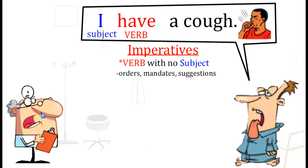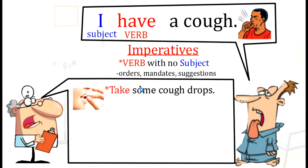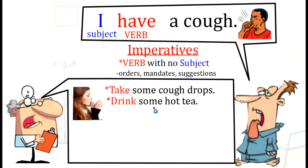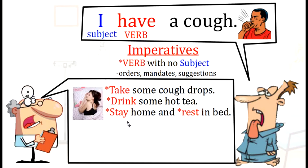Let's look at some examples that Dr. White gives Mr. McDonald. For example, 'Take some cough drops.' 'Take' is the verb, and there is no subject, so this verb is an imperative — it is an order, a mandate, or a suggestion. Or, 'Drink some hot tea' — again, the verb and no subject. Another example: 'Stay home and rest in bed.' We have two imperatives: 'stay' and 'rest.' Notice there are no subjects in the sentence, only the verbs.